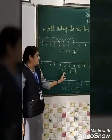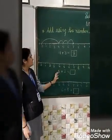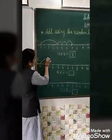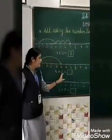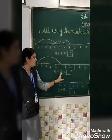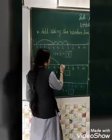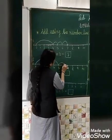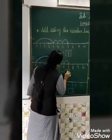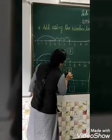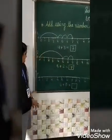Next: 5 plus 2. Which number first? 5. So here we go from 0 to 5. Then which number? 2. So we jump 2 numbers: 5 after 6 and 7. The answer is 7.